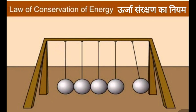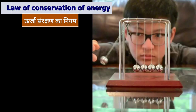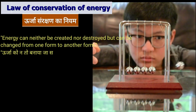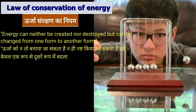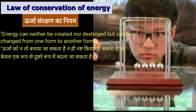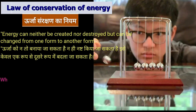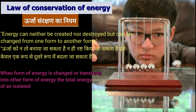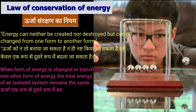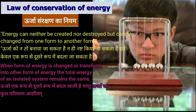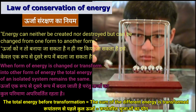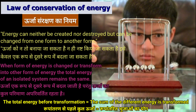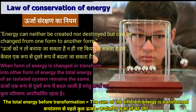Next is the Law of Conservation of Energy — Urja Sanrakshan Ka Niyam. According to this law, energy can neither be created nor be destroyed, but can be changed from one form to another form. Urja ko na toh banaya ja sakta hai na hi nasht kiya ja sakta hai; isse kewal ek roop se doosre roop mein badla ja sakta hai. When one form of energy is transformed into another, the total energy of an isolated system remains the same. Total energy before transformation is equal to the sum of the different energies transformed.